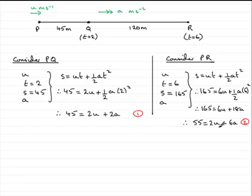So we have two simultaneous equations then. And we should be able to solve these. So what I'm going to do now is because the terms in U are the same, 2U, 2U, what I'm going to do is equation 2 minus equation 1. So if we do that, what we get is going to be 55 take away the 45, which is obviously 10. So we therefore have 10 equals. And then we've got 6A minus the 2A, which is 4A. And if you divide both sides by 4, A would equal 10 divided by 4, which is 2 and a half. 2 and a half meters per second per second.